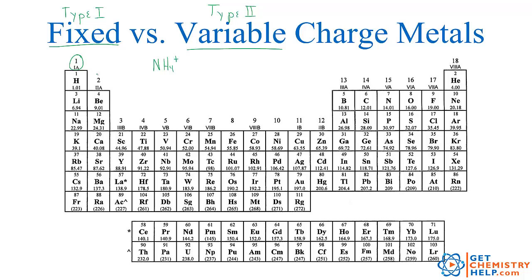Fixed charge metals are all of the metals in group 1, group 2, and then what I call the magic triangle. All of these metals in group 1 — lithium on down — are all 1+. So lithium, sodium, potassium, rubidium, cesium, etc. All of these metals in group 2 — beryllium, magnesium, calcium, strontium, barium — these all like to be 2+. So those are all fixed charge.